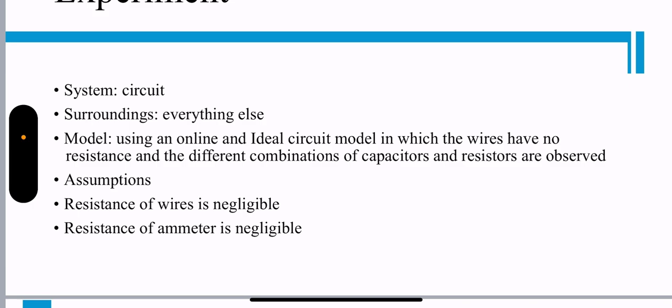The experiment. The system is the circuit, the surroundings is everything else. The model: using an online and ideal circuit model in which wires have no resistance and the different combination of capacitors and resistors are observed.